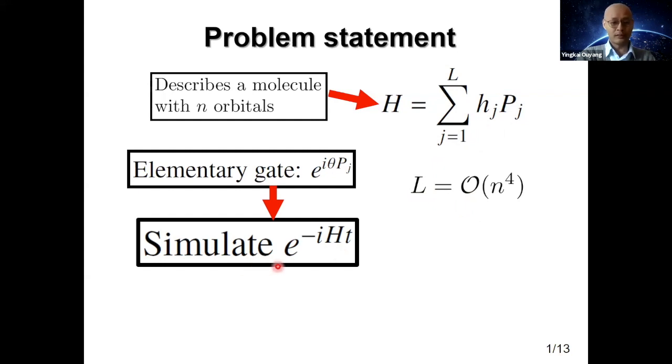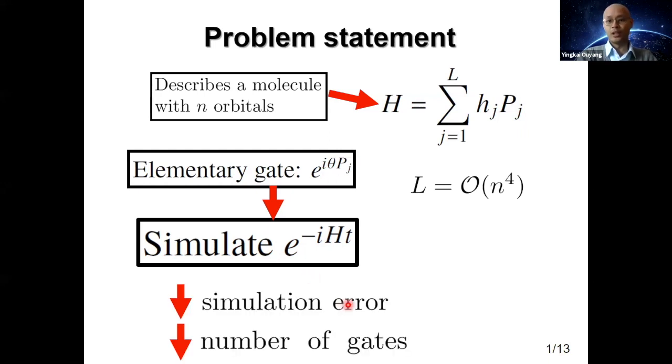The problem we are interested in is quantum simulation, which is simulating the unitary matrix e to the minus iHt. What we are given are elementary gates e to the i theta Pj, where each Pj is, for example, a multi-qubit Pauli operator. Because we are approximating this ideal unitary matrix with these elementary gates, there will be a simulation error which we would like to minimize. Also, we would have to use as few gates as possible.